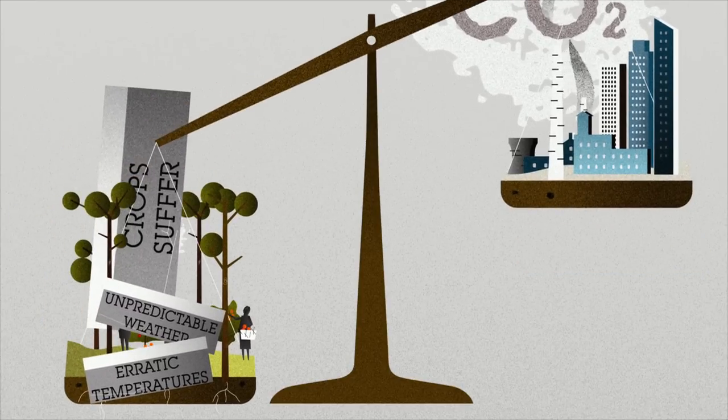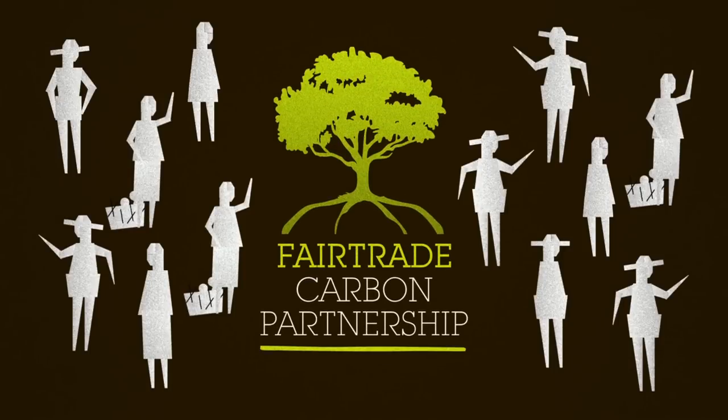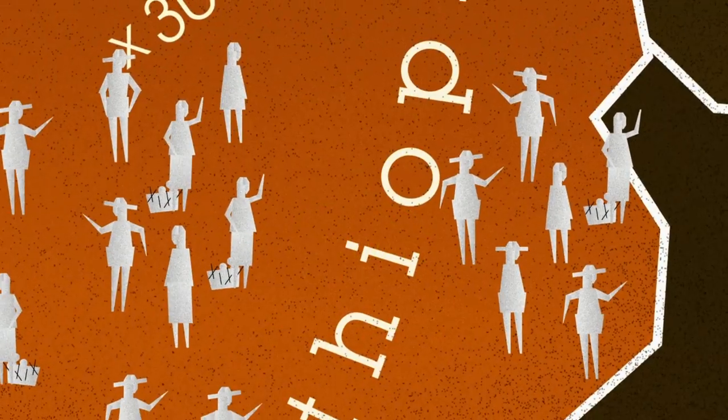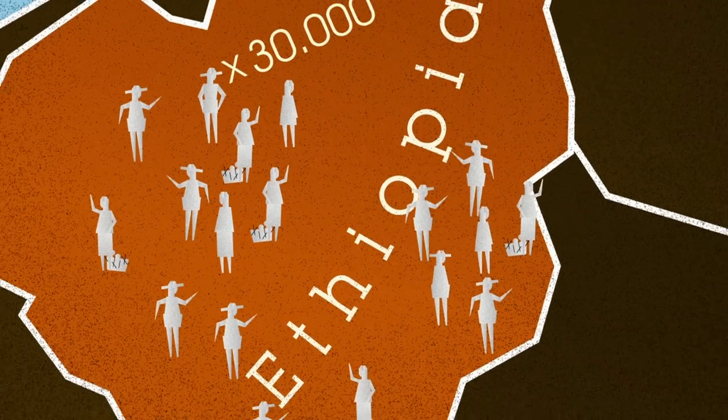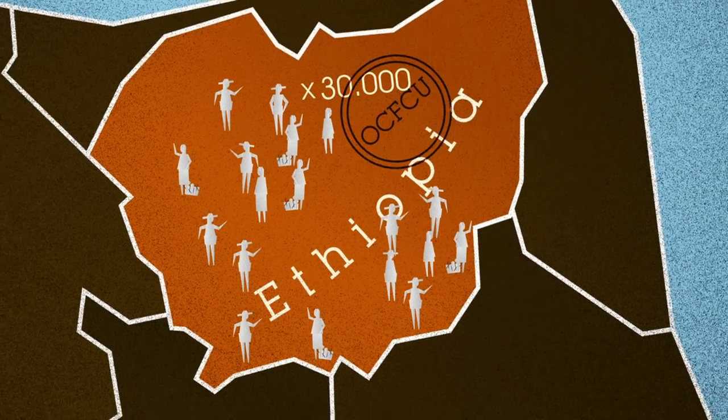Together with these farmers, Max Havilar and ECO have initiated the Fairtrade Carbon Partnership. A program that helps more than 30,000 Ethiopian farmers who are members of Fairtrade cooperatives.